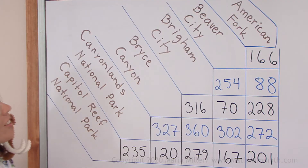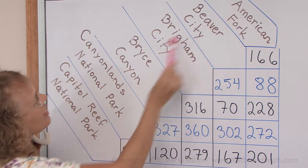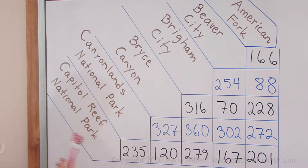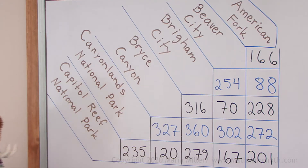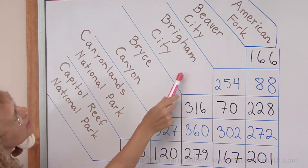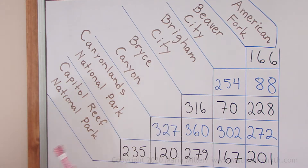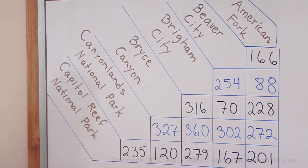In this chart the places are listed here, such as American Fork, Beaver City, Brigham City, Bryce Canyon, Canyonlands National Park, Capitol Reef National Park.